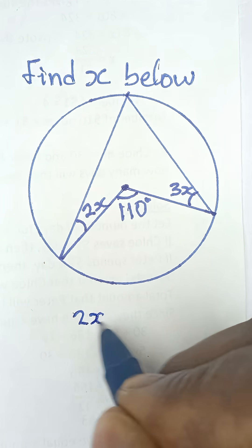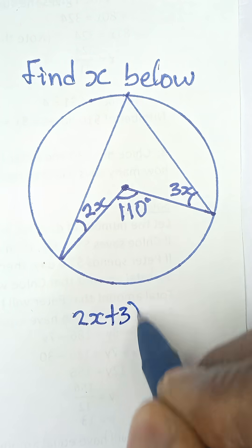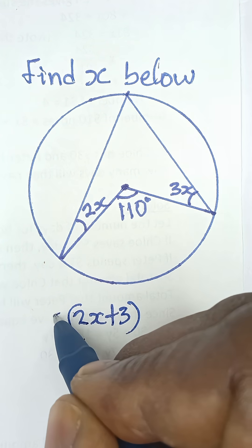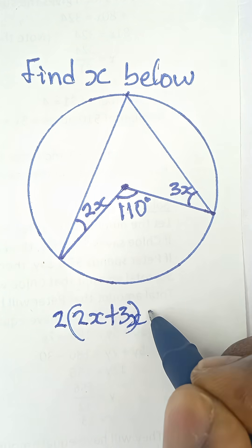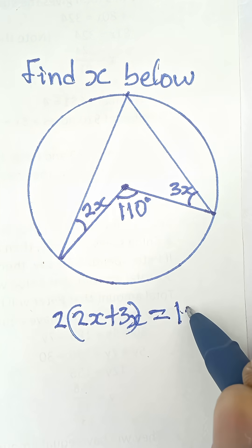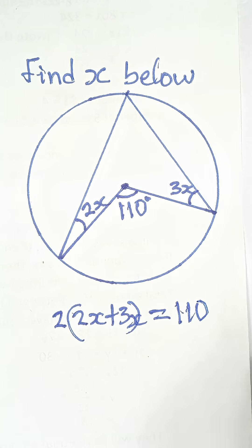2 times (2x plus 3x) is equal to the angle at the center, which is 110.